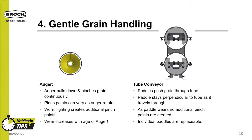The fourth reason to switch to a tube conveyor is that they offer gentler grain handling when compared to an auger. As the auger rotates in the tube, it pulls down and pinches grain between the tube and auger flighting. This pinching causes grinding and breakage. Also, any worn flighting creates larger pinch points which allow for more grain to be damaged. And remember, all auger flighting will wear as the auger ages, which will cause further damage to the grain.